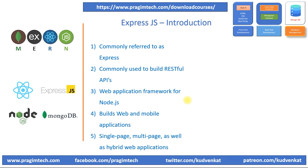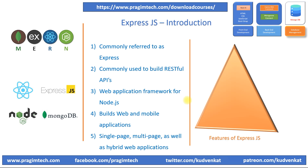It provides a robust set of features to develop both single-page and multi-page as well as hybrid web applications. Express is a minimal and flexible Node.js application framework that provides a thin layer of fundamental web application features without obscuring Node.js features. Middleware functions are functions that have access to the request object, the response object, and the next middleware function in the application's request-response cycle.